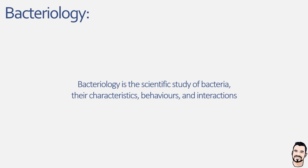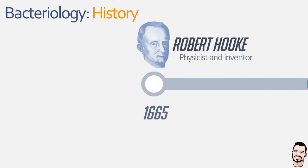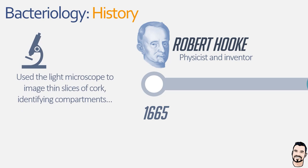It all started towards the end of the 17th century when Robert Hooke, a physicist and an inventor, built the very first compound microscope, and in doing so he was able to view thin slices of cork. Whilst looking at this cork under the microscope, he observed tiny pore-like structures which he called cells, and this was the first time the term cell was used in a biological context.